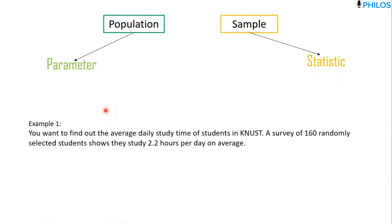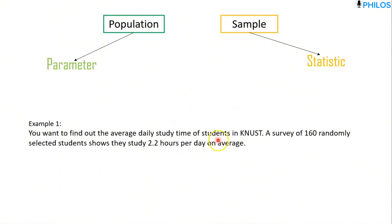Example one: you want to find out the average study time of students in KNUST. A survey of 160 randomly selected students shows they study 2.2 hours per day on average. Now when you look at this, our finding is on students in KNUST — just students in KNUST in general. So all students in KNUST is the population.